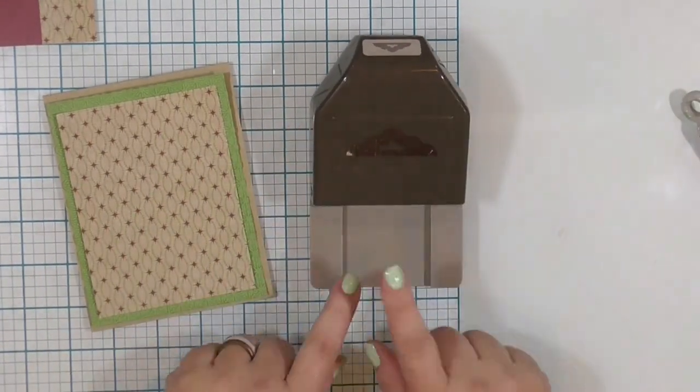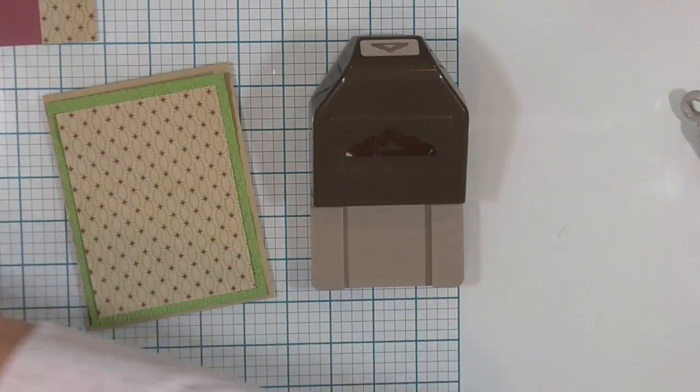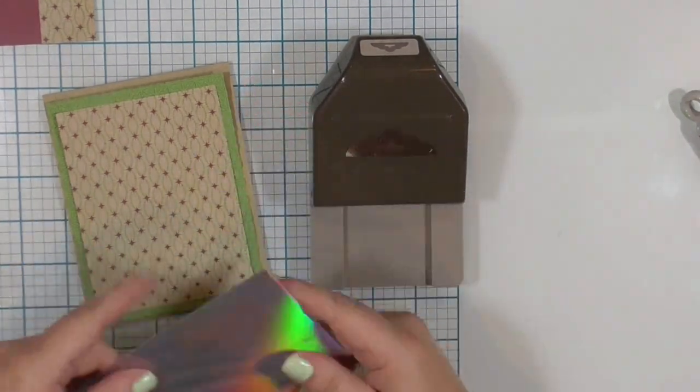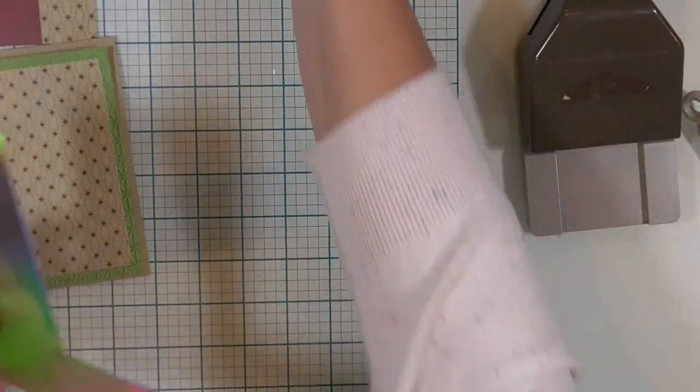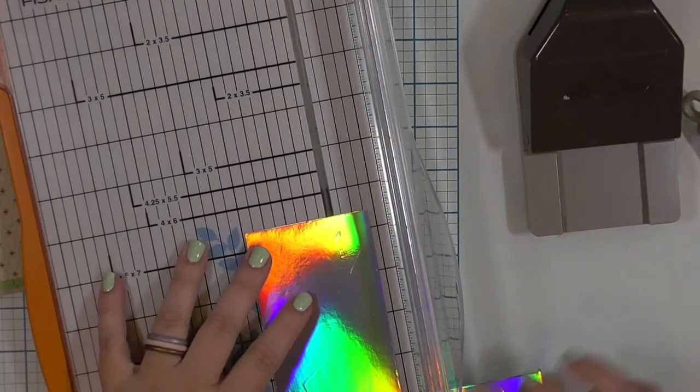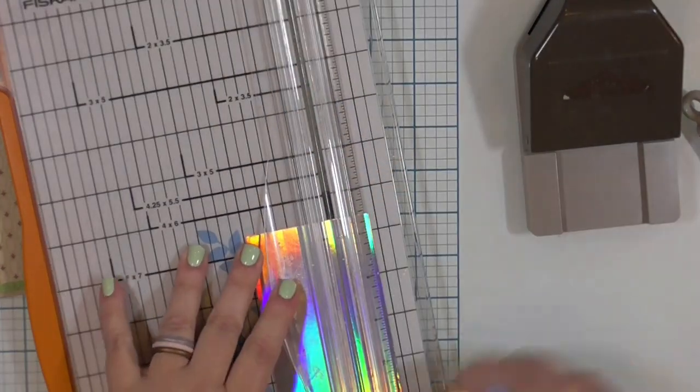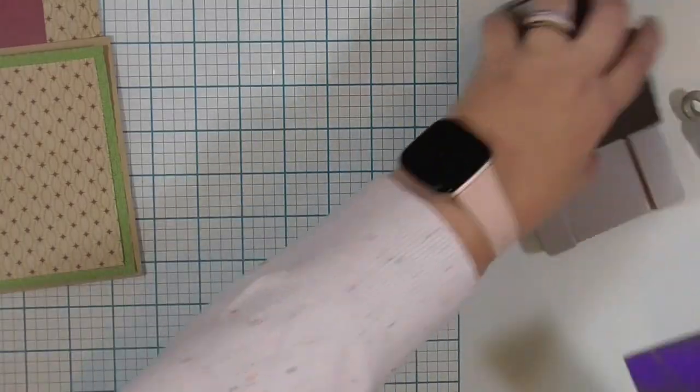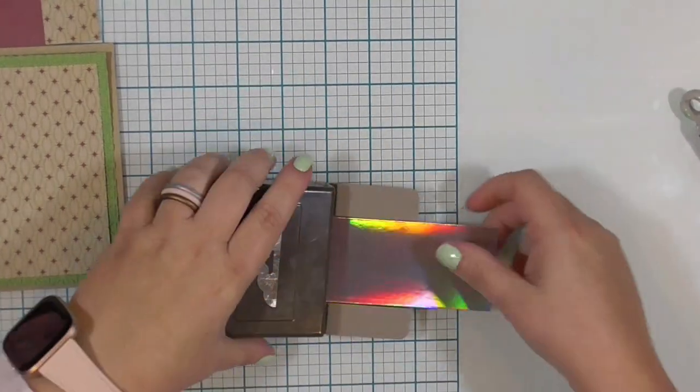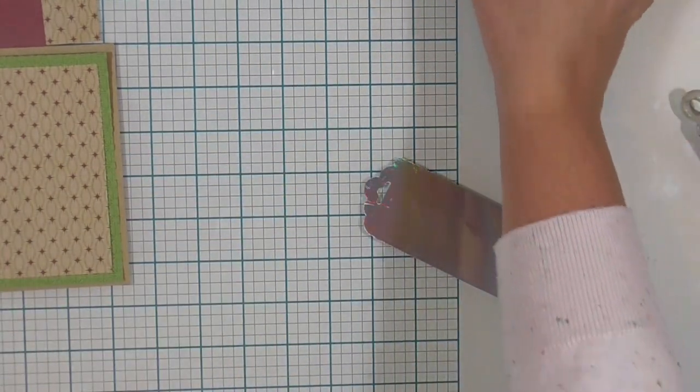It's time to work on that tag. I have this old tag punch. It's a Stampin' Up one, and it will cut a two inch wide piece of paper into a fancy tag. I don't remember the name of the punch. I don't know if they still sell it. But there's lots of ways to create a tag for the front of a card. So I'm going to trim this piece of shiny paper down to two inches, slide it up into that punch, and look at that, I have a pretty fancy tag.